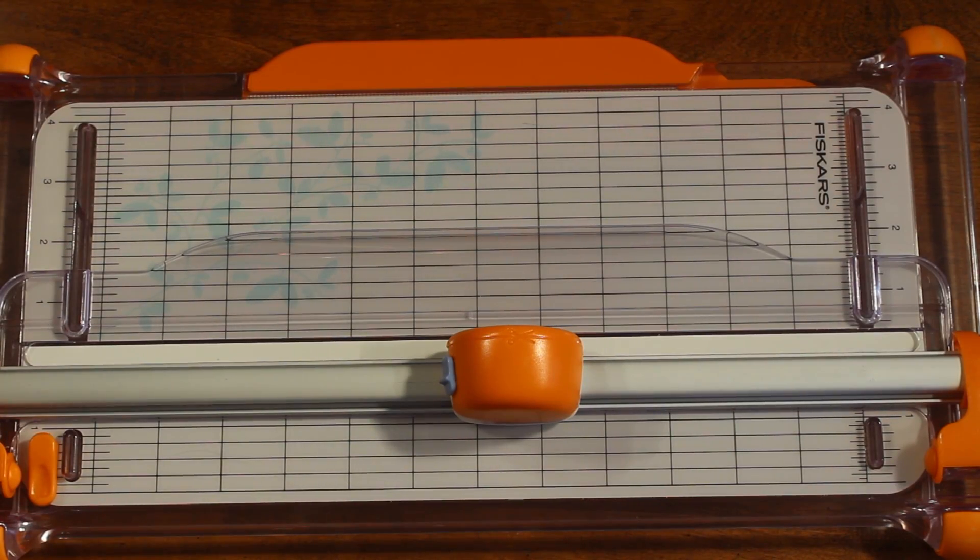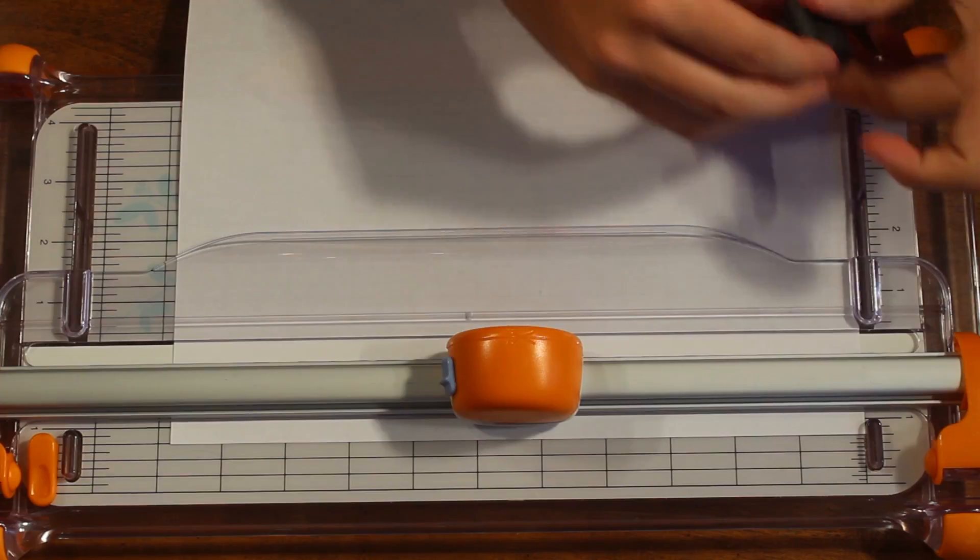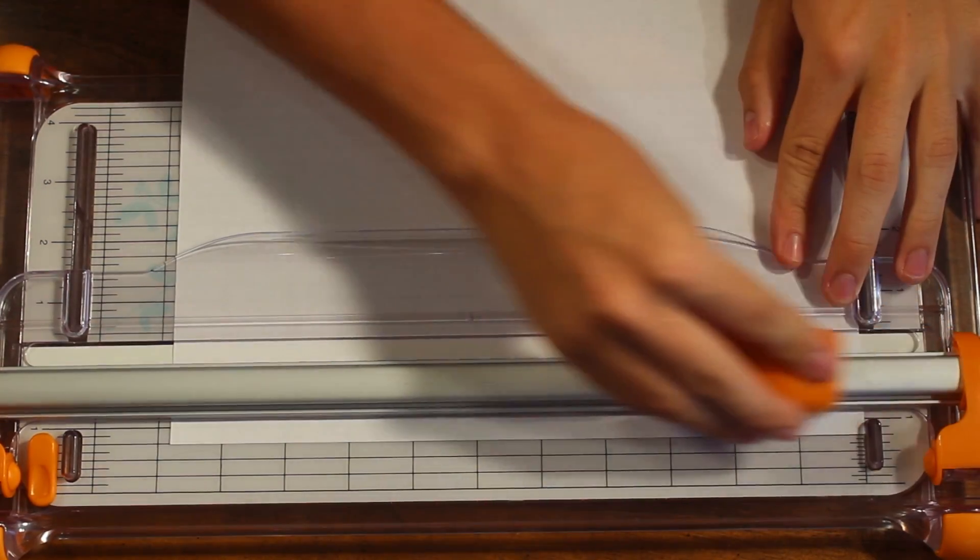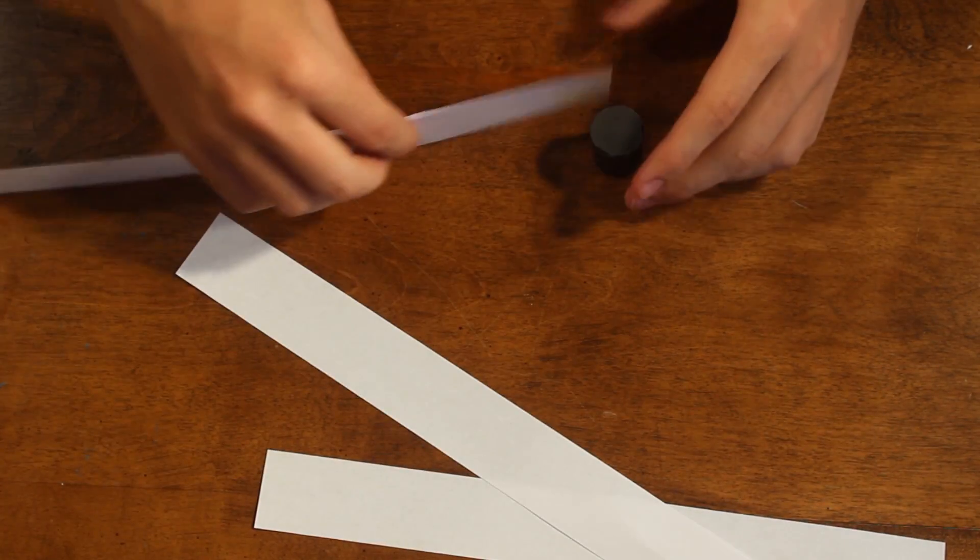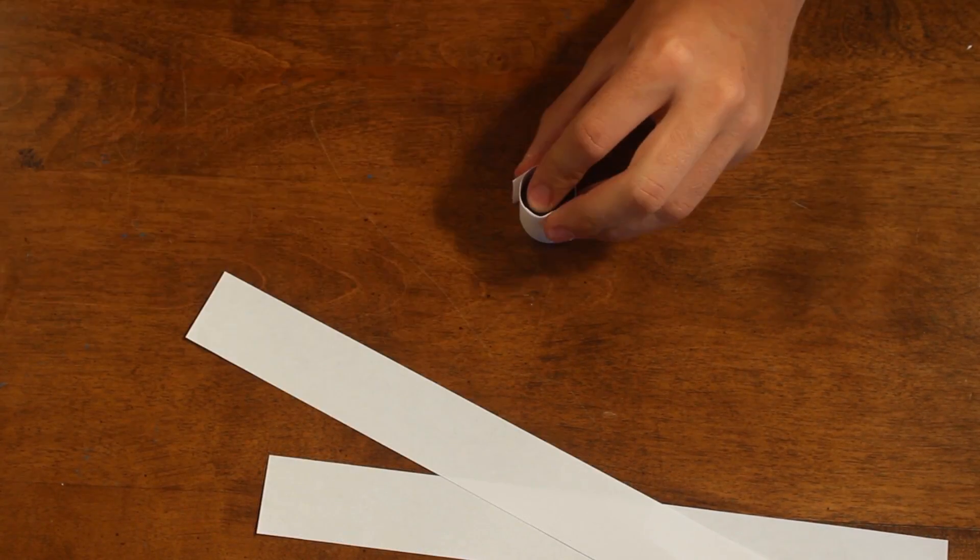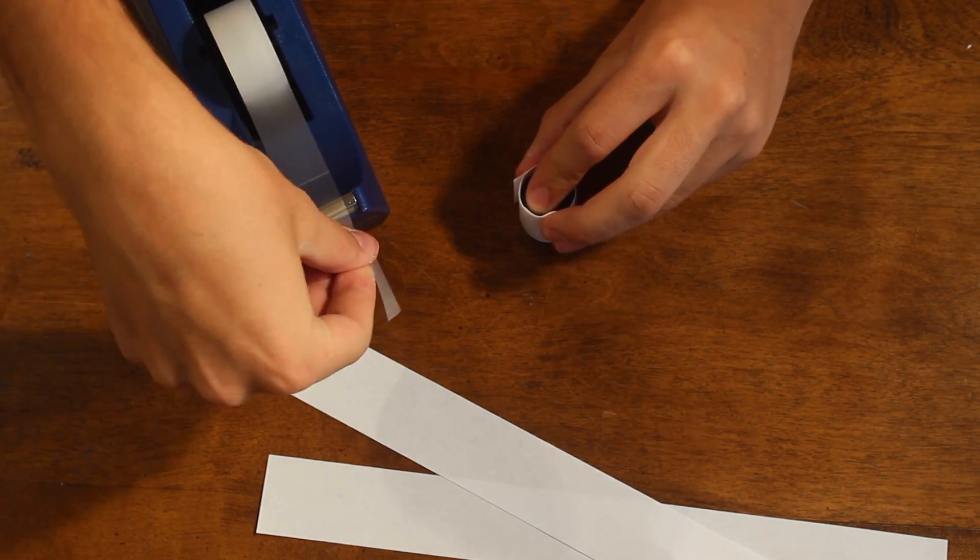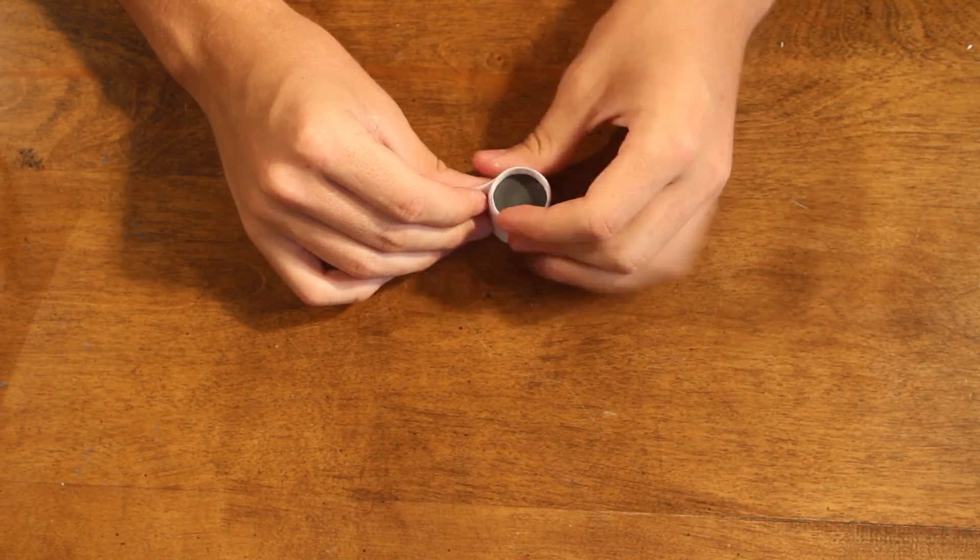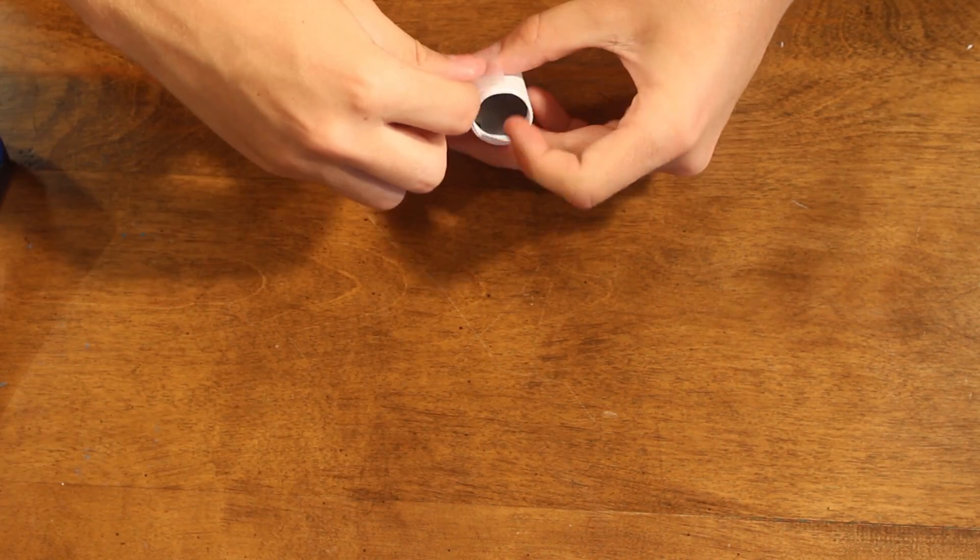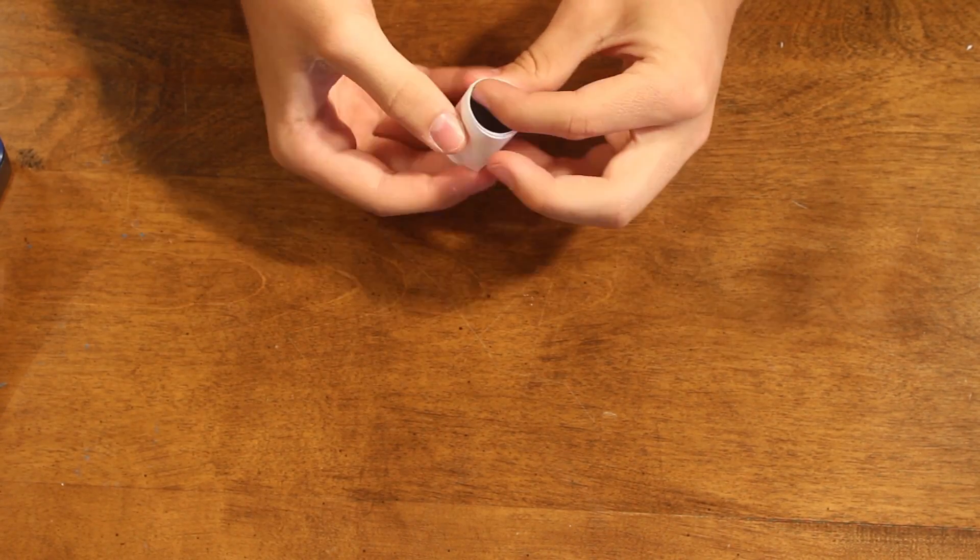So step one is to cut three strips of long paper that is thicker than your magnet. Once you have your three strips of paper, we're going to start wrapping it around the cylinder magnet. Now when you're done the strip, just simply tape it securely to itself, but make sure it's not too tight. When you're on the very last strip, make sure you tape it once again, just to make sure it doesn't fall apart in the next few steps.